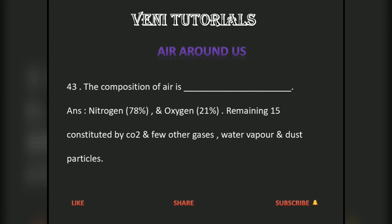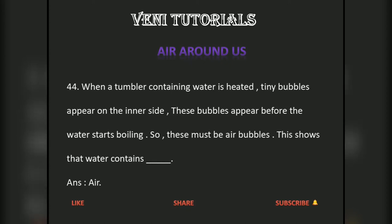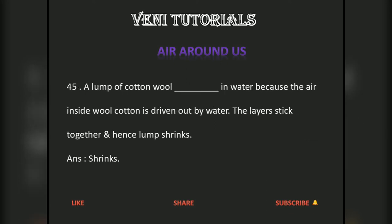When a tumbler containing water is heated, tiny bubbles appear on the inner side before the water starts boiling, showing that water contains air. A lump of cotton wool shrinks in water because the air inside the cotton wool is driven out by water and the layers stick together.